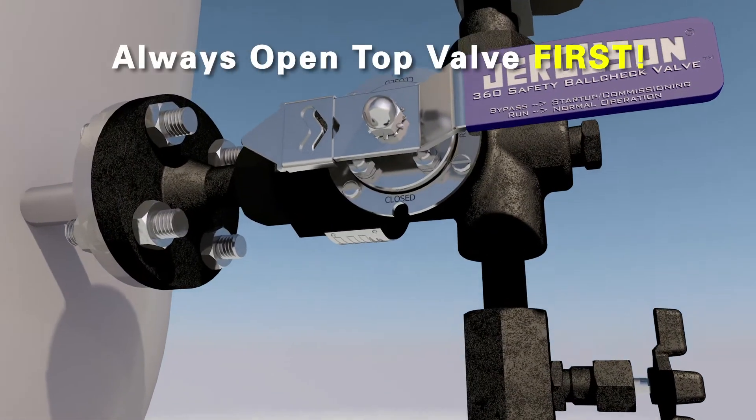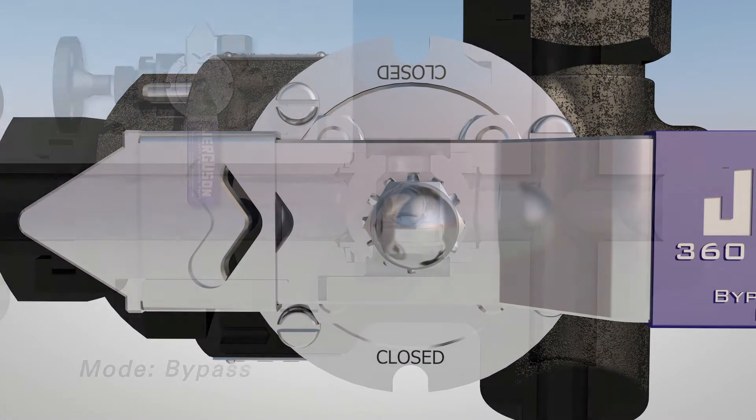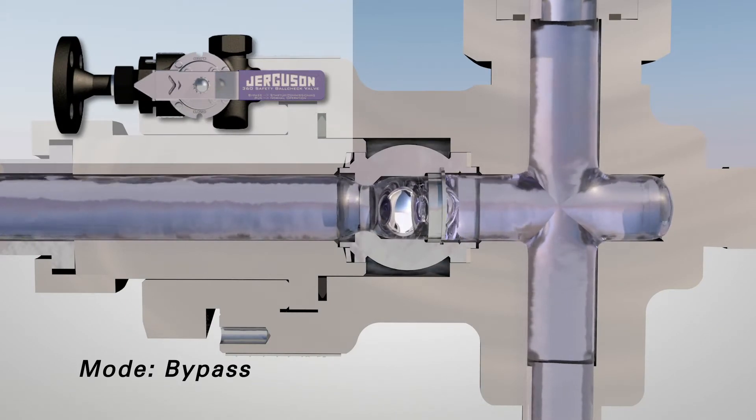It is best practice to always open the top valve first when commissioning any level device. Fluid will now flow through the valve and into the glass gauge without seating the ball check.